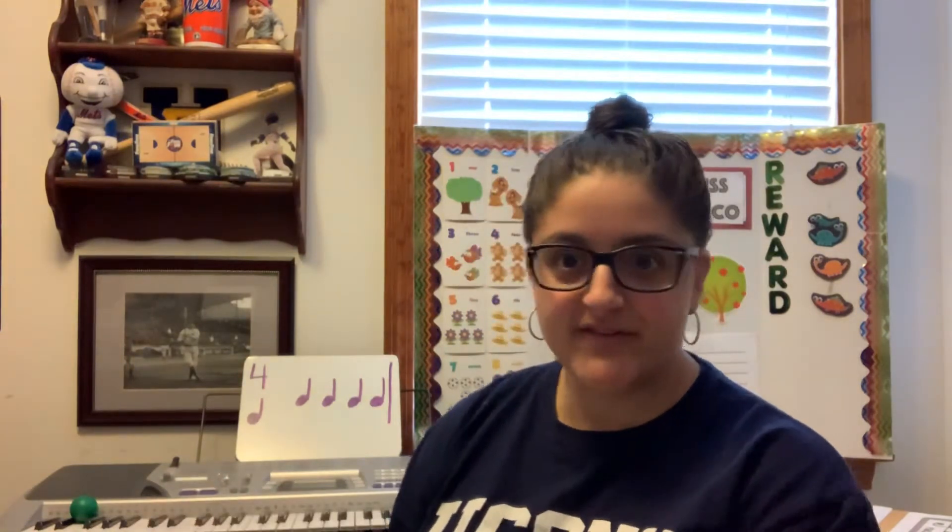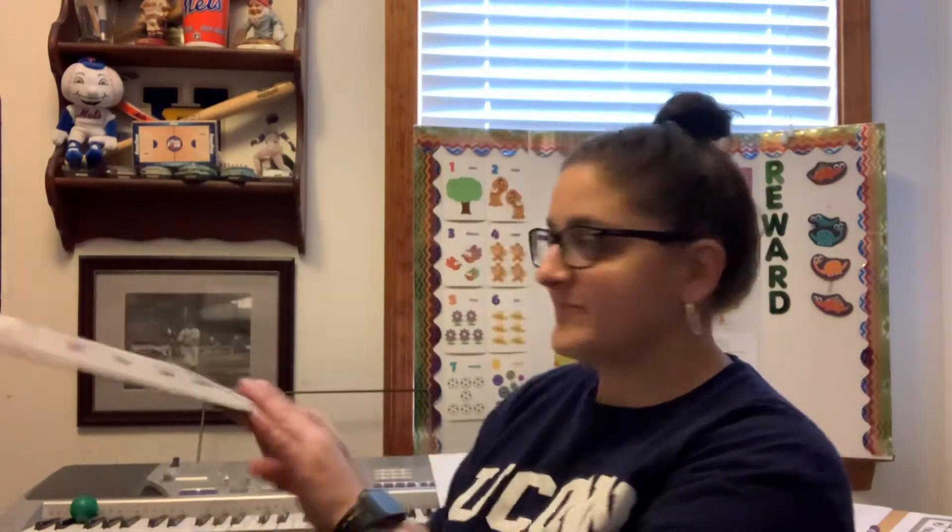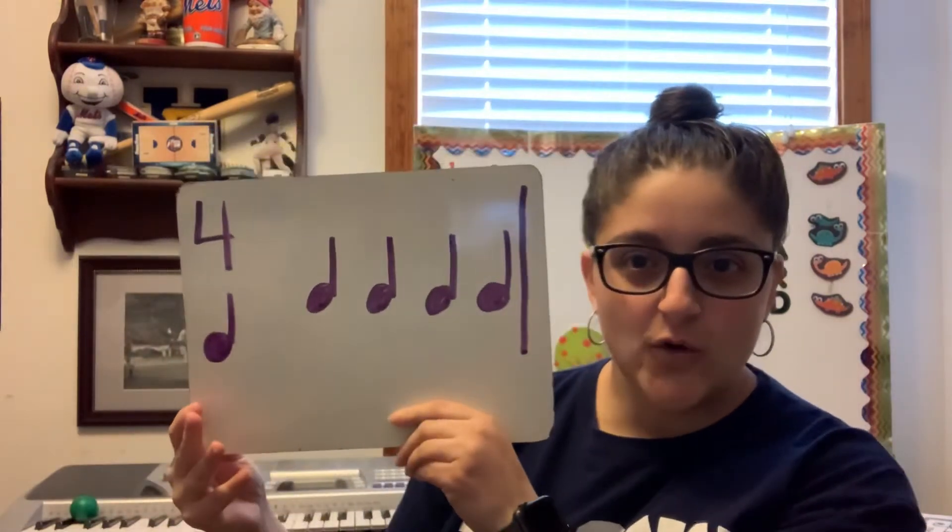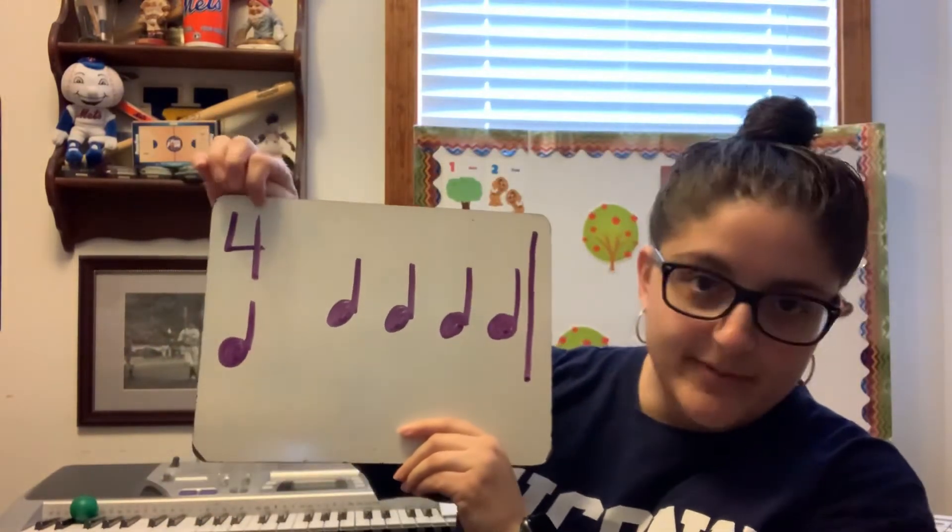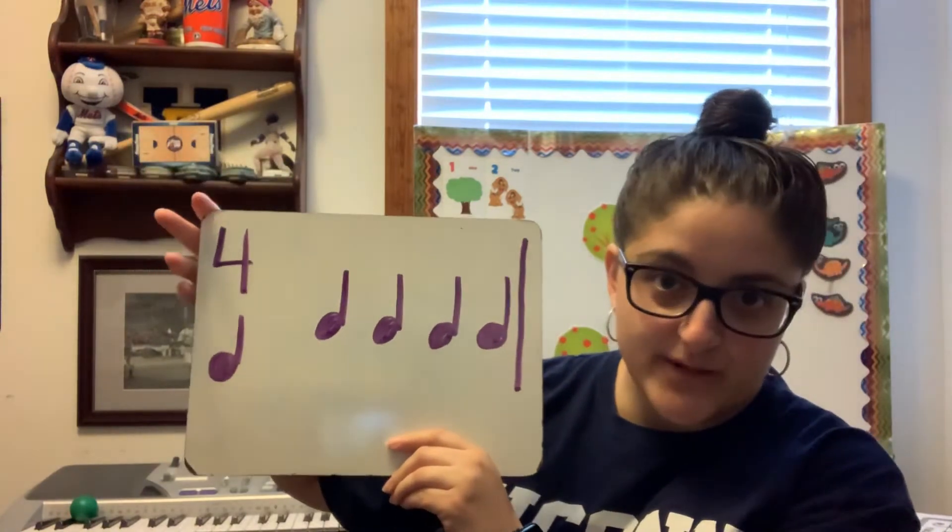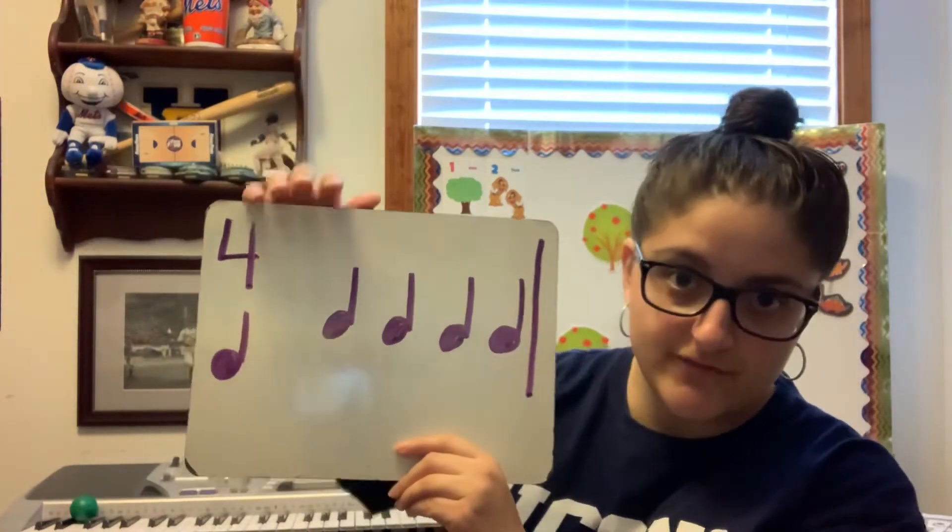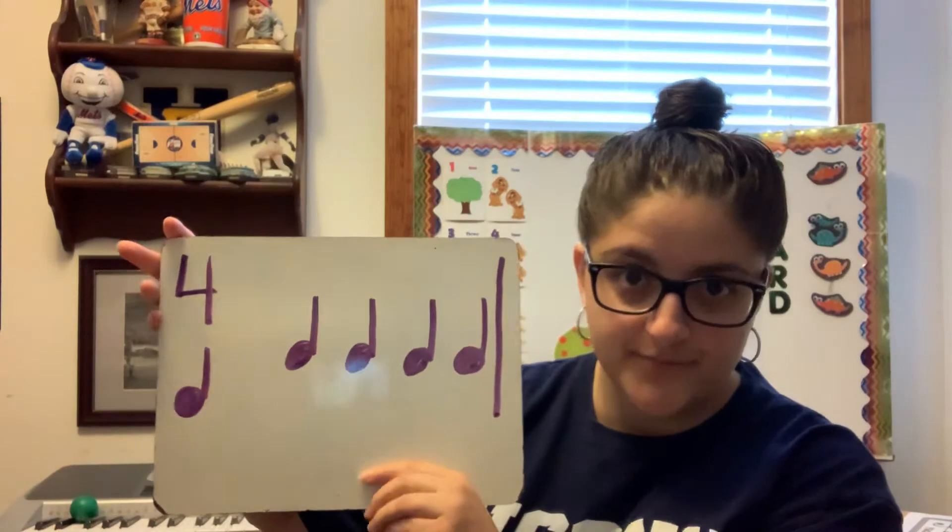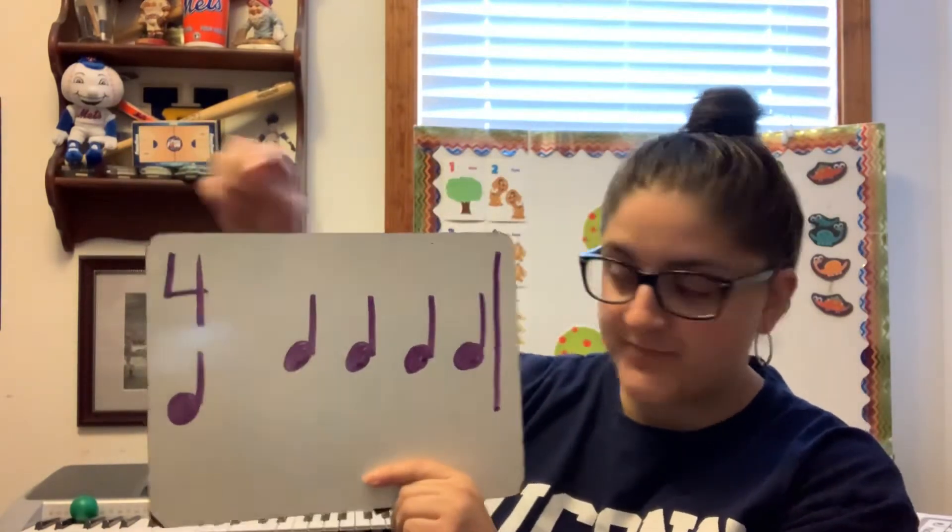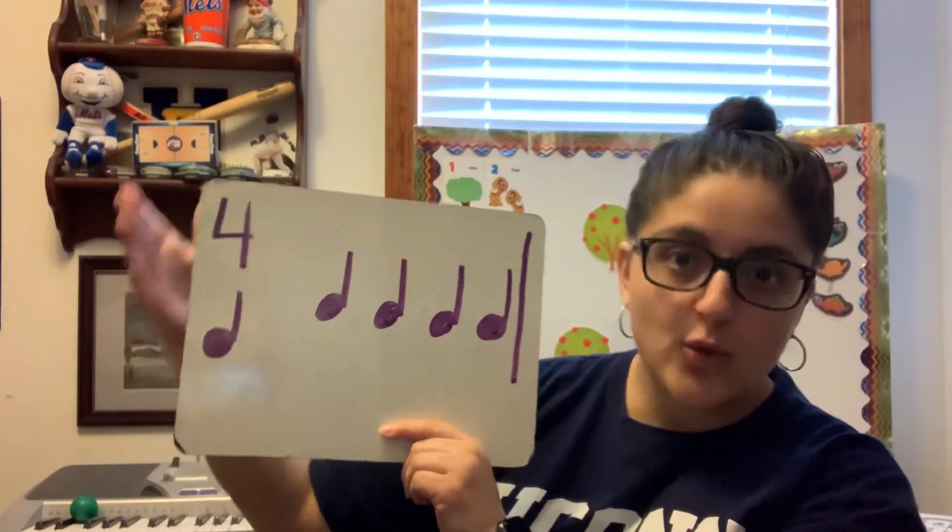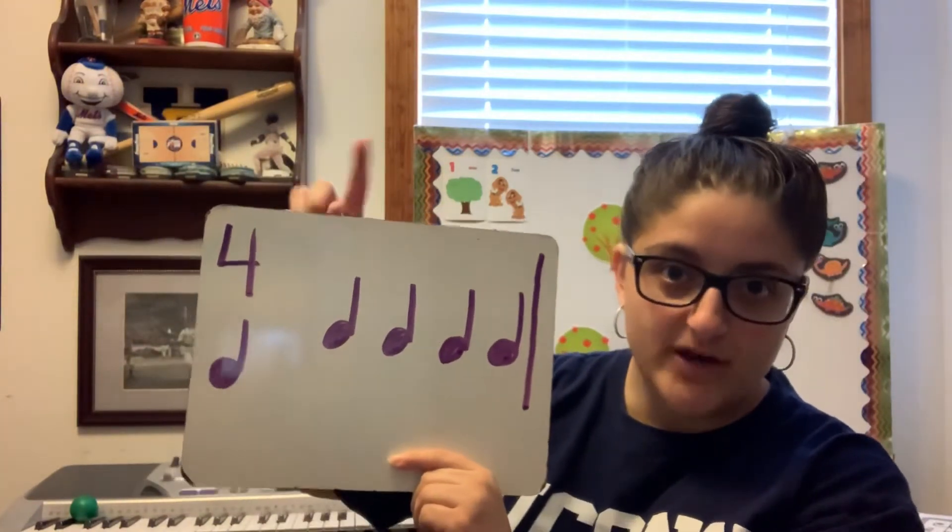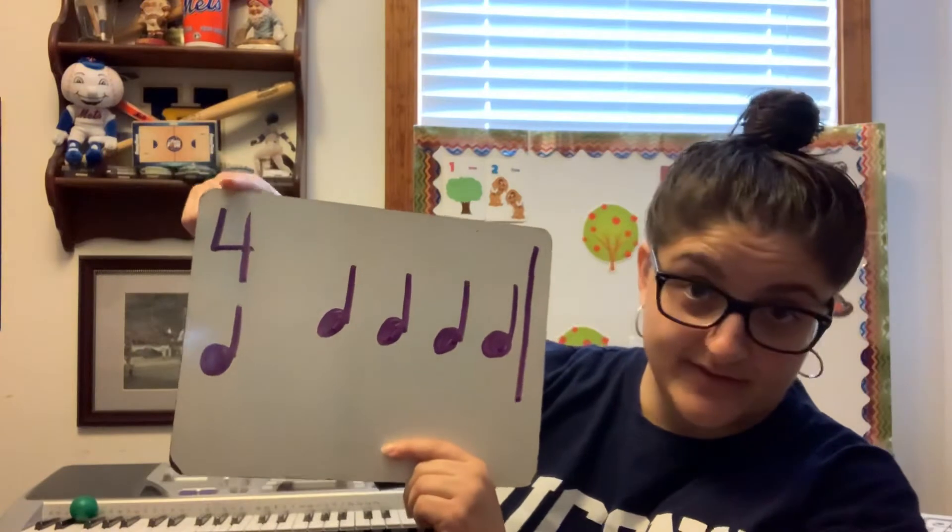So what do we do with this stuff? So I have a simplified time signature on this side. Our time signature just tells us how many beats we can fit into one chunk of the music, also known as a measure. So right now on this whiteboard I have one measure. I can have four quarter notes or four beats in one measure, according to my time signature right here.